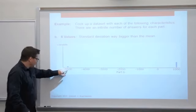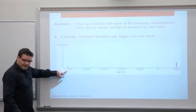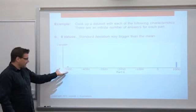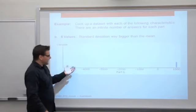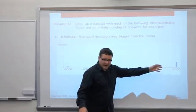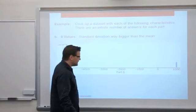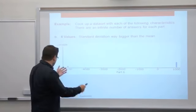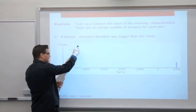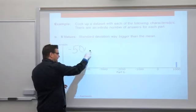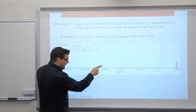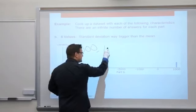I threw one data point at negative 5,000 — nothing says we can't have negative data — and the other five way up at 1,000. So the data set I have is: negative 5,000, and then five 1,000s.